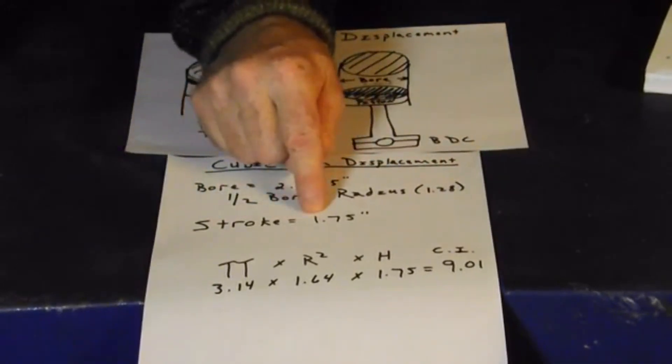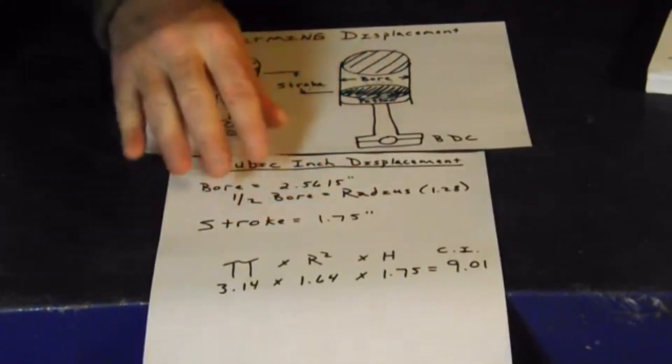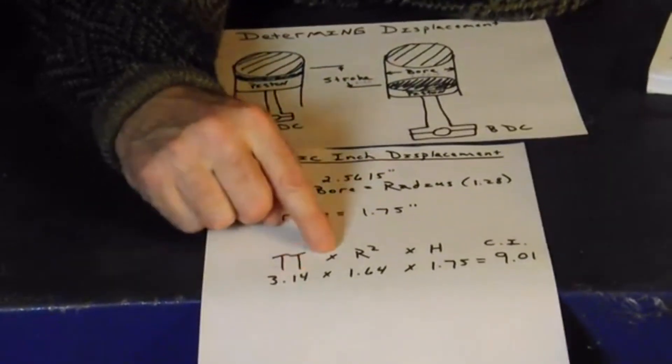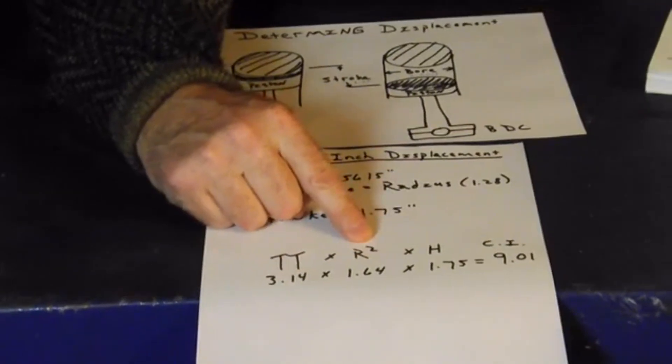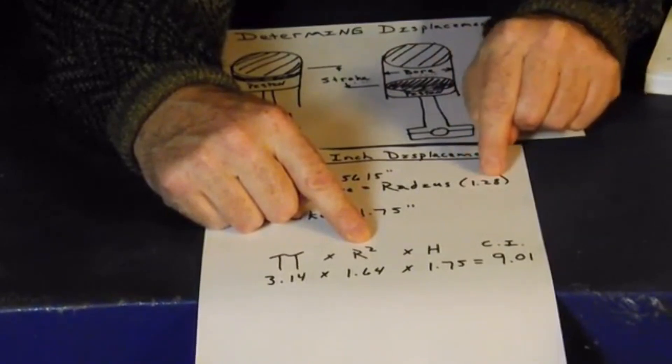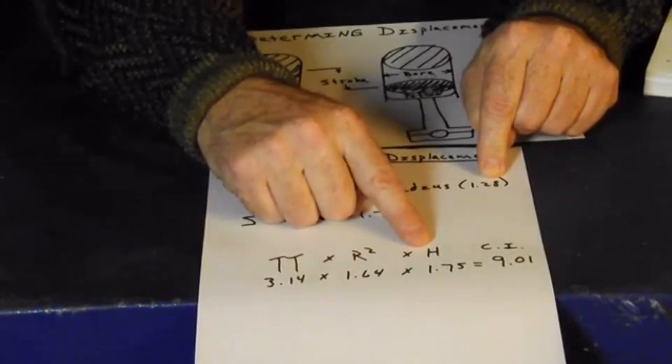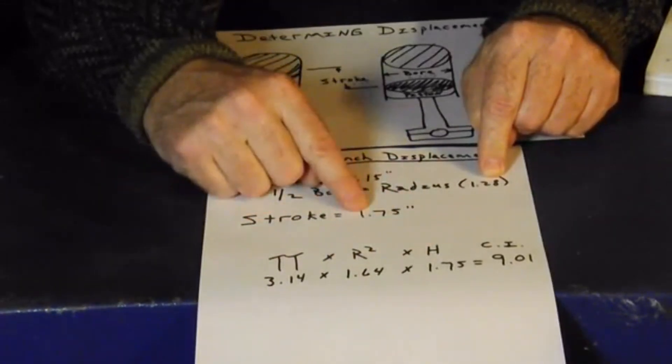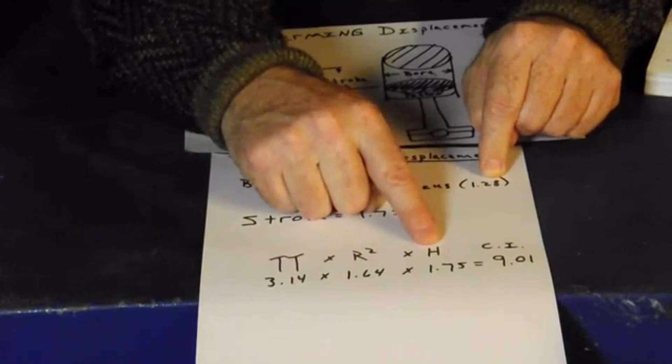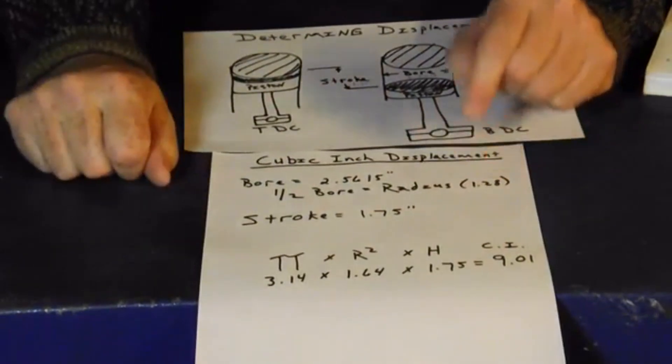It also said that our stroke was 1.75 in inches. All this is in inches. So using the formula that you had in high school, pi is 3.14 times radius squared. We said that our radius was 1.28. So 1.28 times 1.28 is 1.64 times height, which is our stroke, 1.75. So if you multiply pi times radius squared times height, you're going to get 9 cubic inches. And that is exactly what they said this engine was.